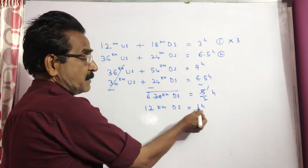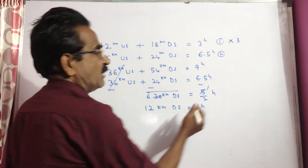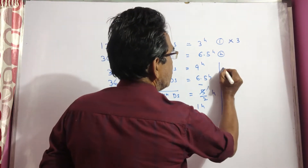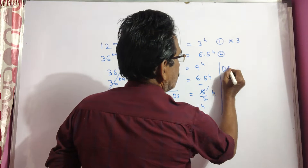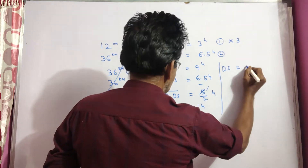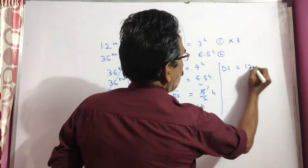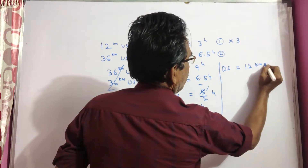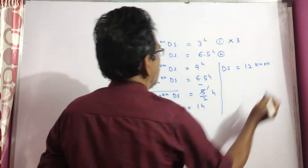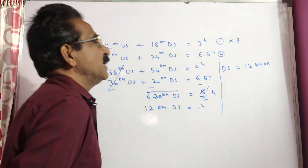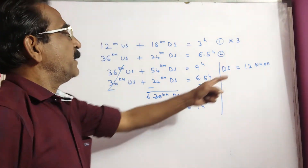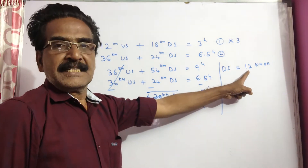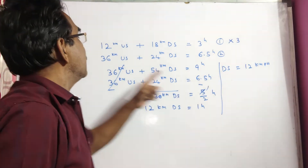12 kilometers downstream is traveled in 1 hour. That means the downstream velocity is 12 kmph. Let us substitute this value — ds is equal to 12.